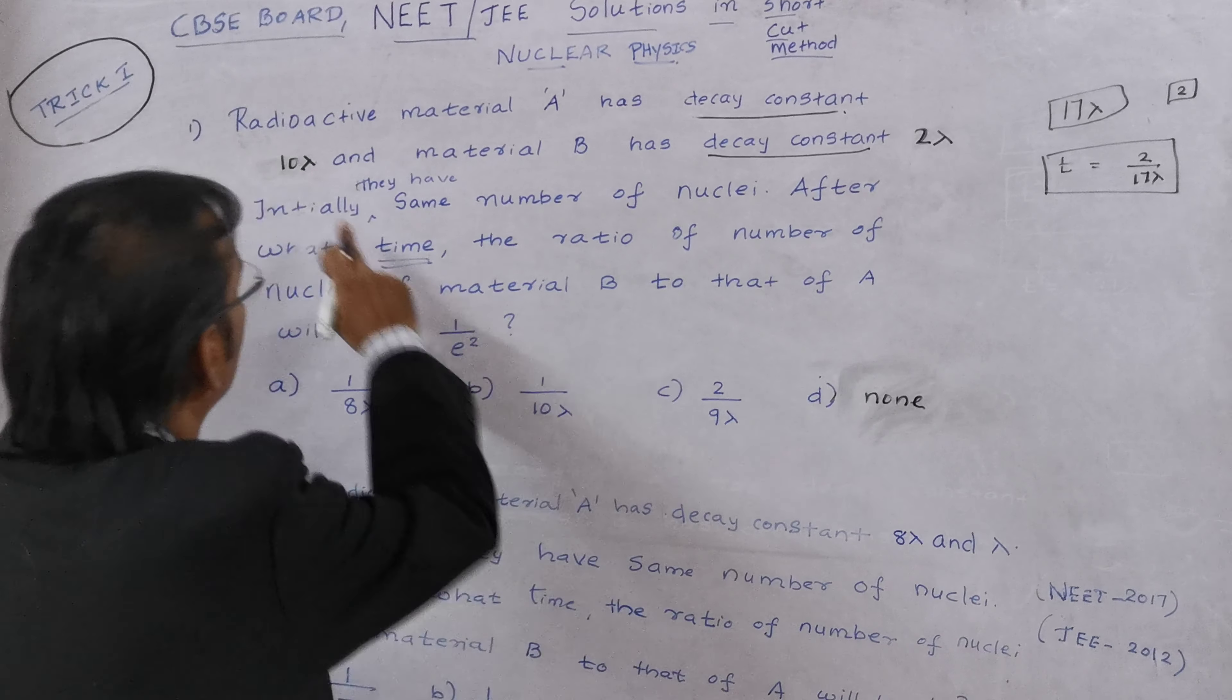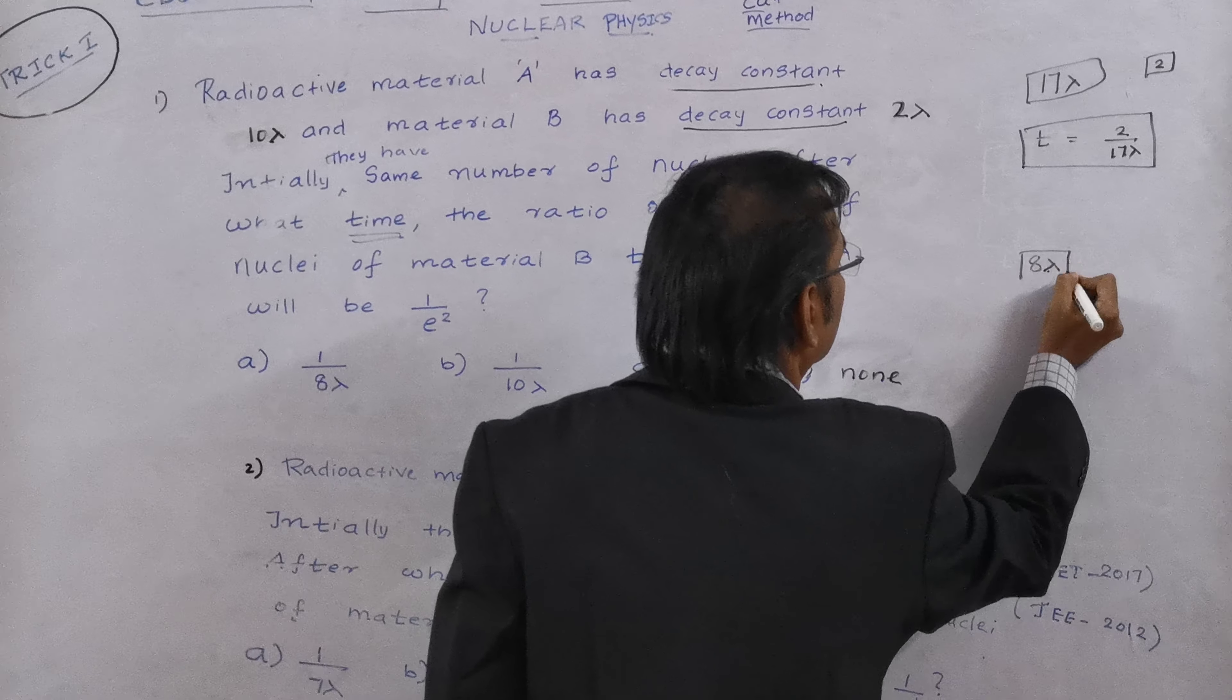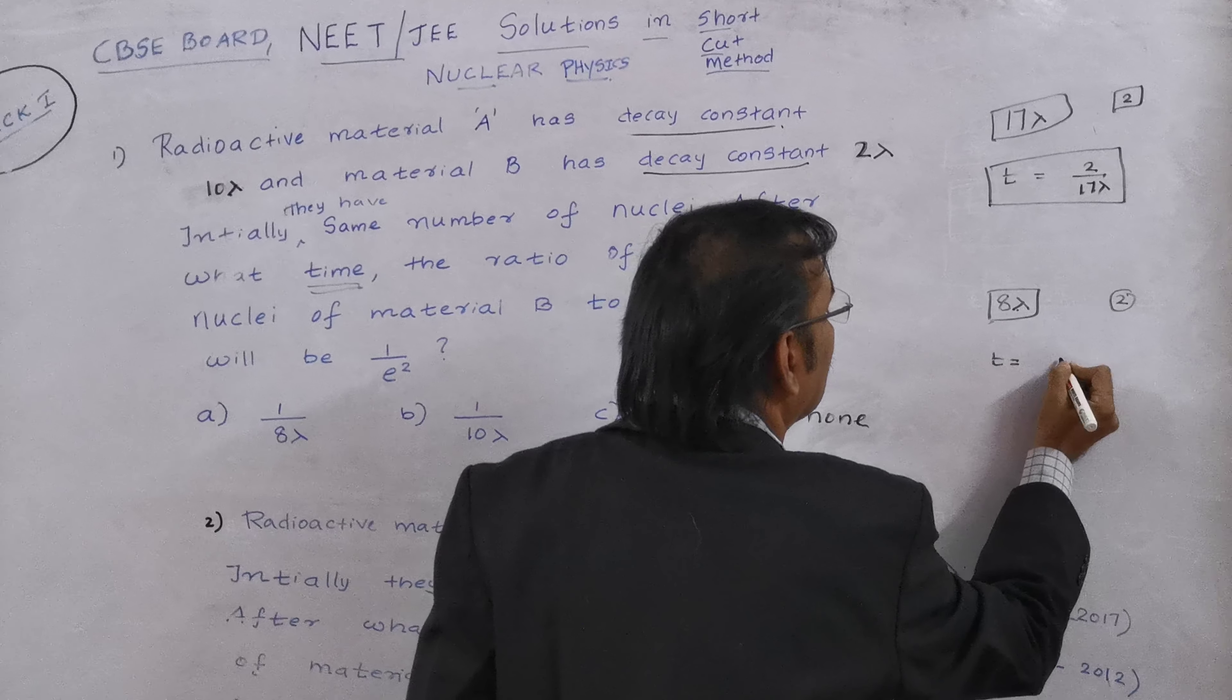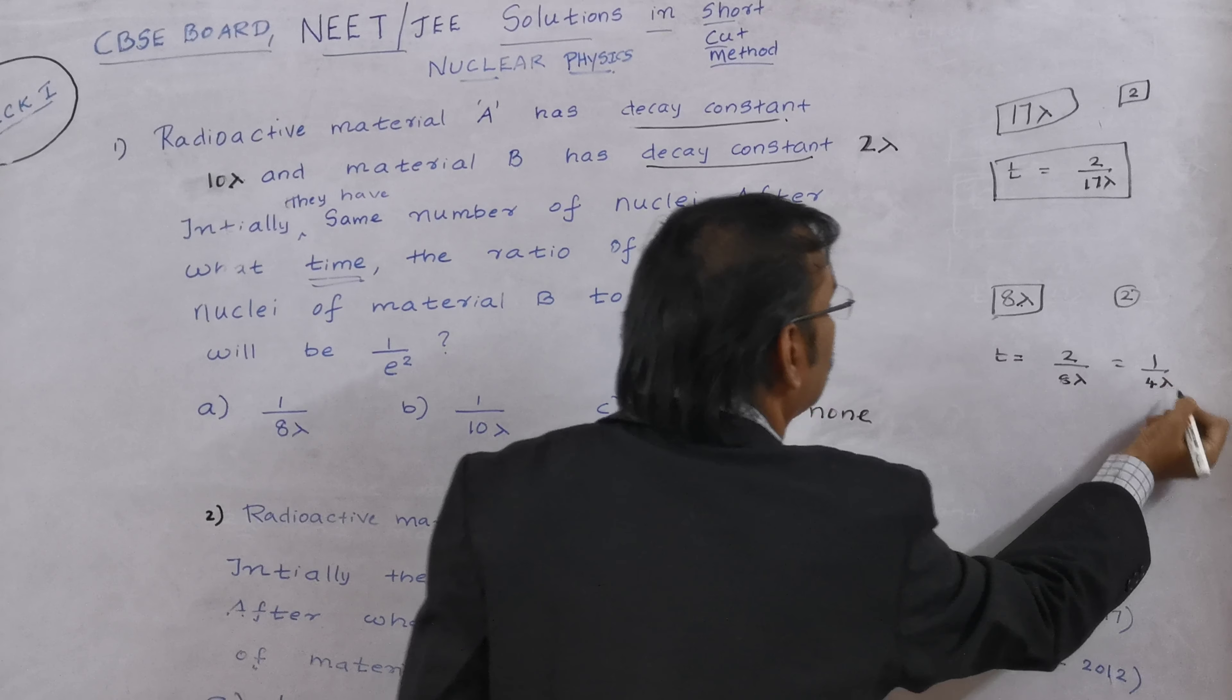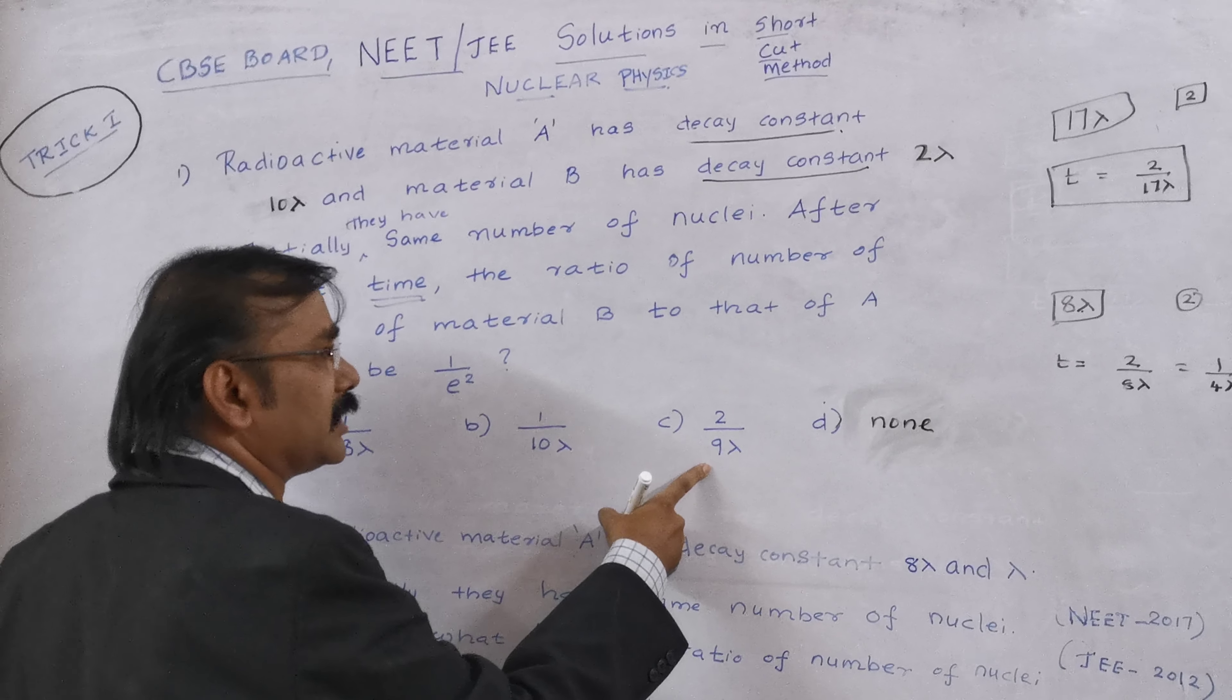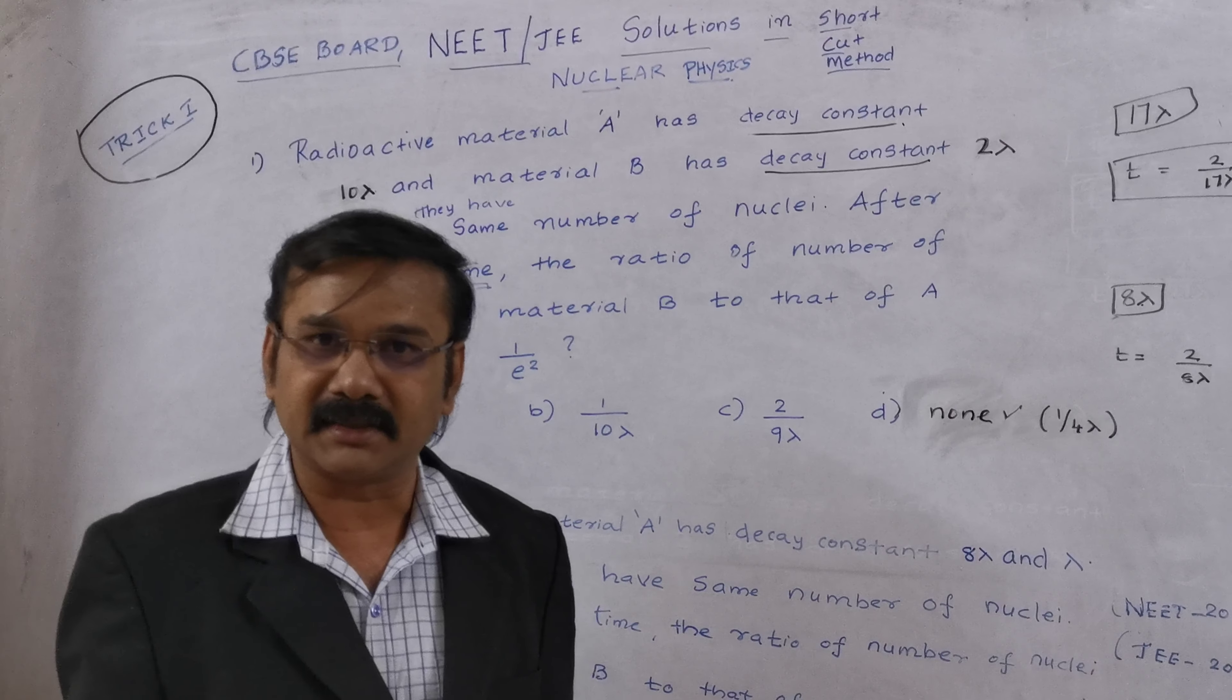So I will just go with your answer now. 10 lambda minus 2 lambda, you will get 8 lambda. So this is the box. Then what is the value of exponential if it is 2? So T will be equal to, what is your answer? It is 2 by 8 lambda. That is 1 by 4 lambda. We will see where the answer is. 1 by 8 lambda, it is not there. 1 by 10 lambda, it is not there. 2 by 9 lambda, it is not there. So the answer is then, yes, none. Because the answer what we are getting is 1 by 4 lambda. I hope you also got the answers within 10 seconds.